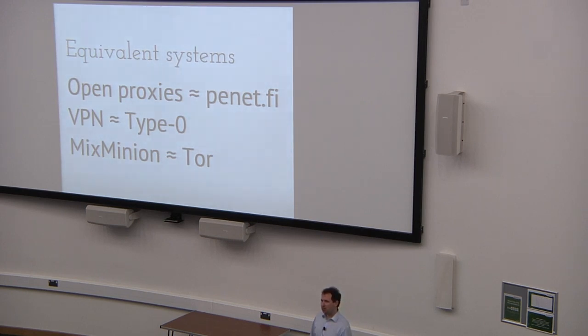If you introduce encryption, like the Type 0 cypherpunk remailer, then you end up with a VPN. So someone can see you're using a VPN. They're not able to see the traffic that you're sending to the VPN because it's encrypted, but they are able to see how much you're sending and in particular the VPN operator is going to be in a good position to work out who's doing what. But if you now include all the security features that you can think of and you have a design a bit like MixMinion, when you translate that to the web, you end up with something a bit like Tor.